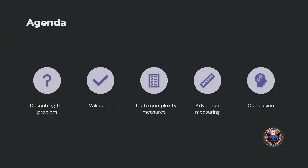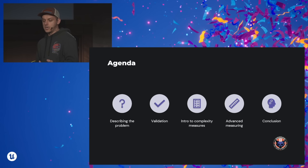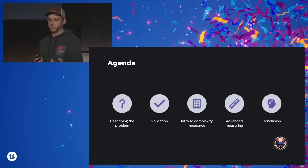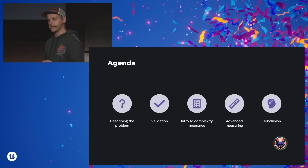What are we going to talk about today? We're going to describe the problem — what is about these blueprints? How can we improve the situation? We're going to look at one of the main ways to solve this, which is via validation. I'm going to show you some interesting formulas you can apply to measure the complexity of blueprints, starting with something easy, then moving into something more advanced, and then draw some conclusions at the end.